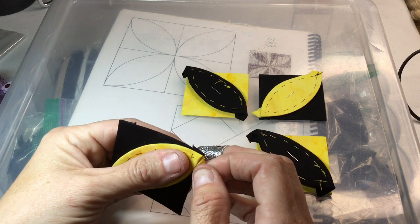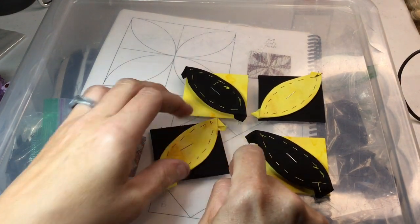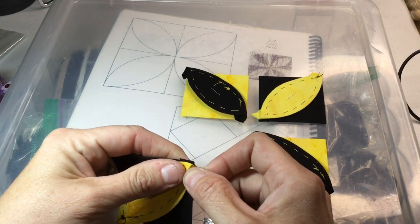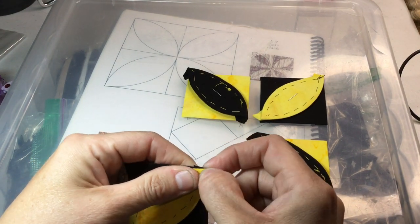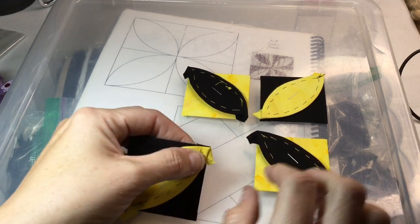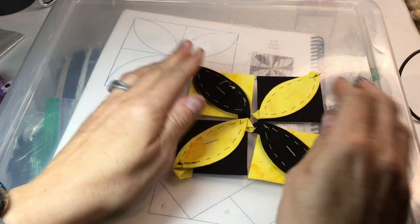You want to start preferably in the center one because these are so close to the edge. If you make sure that the center point is exactly where it needs to be on all four, these are going to line up a lot better when you go to put them together.